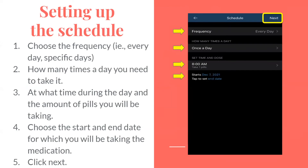Setting up the schedule. Choose the frequency — for example, every day or specific days — how many times a day you need to take it, at what time during the day, and the amount of pills you will be taking. Choose the start date and the end date for which you will be taking the medication, then click Next.